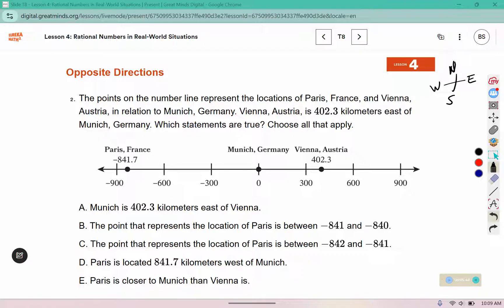And it says the point on the number line represents the locations of Paris, France, Vienna, Austria, and in relation to Munich, Germany. So we have three different locations. Vienna, Austria is 402 kilometers east. So it is east of Germany. We have to go to the east.